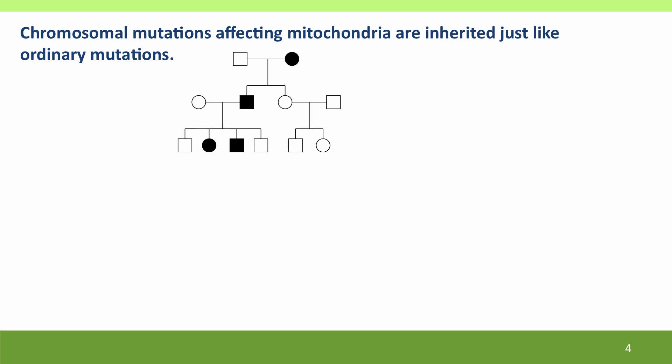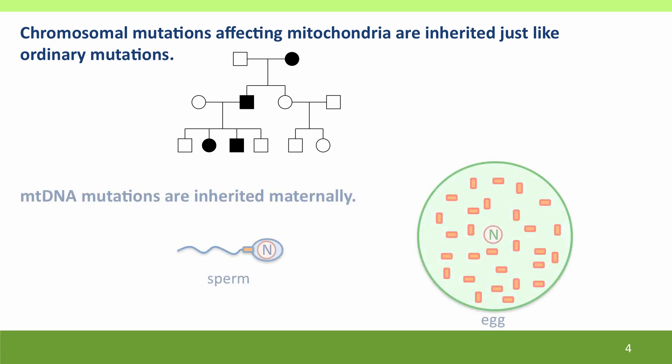Chromosomal mutations affecting mitochondrial genes are inherited just like other autosomal mutations. We can use the same kinds of pedigree analysis, with the proviso that phenotypically it may be a little harder to be sure that all of the phenotypic consequences are being caused by a single mutation. However, the situation is a lot more complicated when we're thinking about mutations in the mitochondrial DNA, partly because mitochondrial DNA is inherited only through the mother.